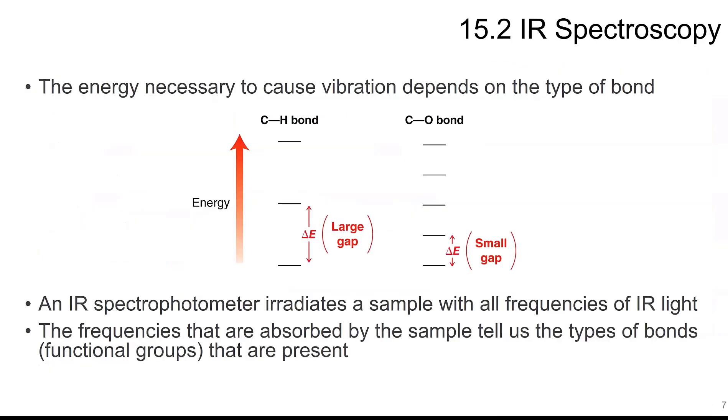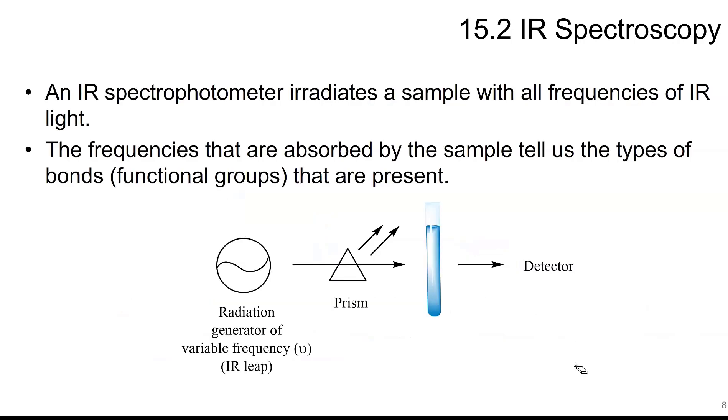So with IR, the energy necessary to cause vibration depends on the type of the bond. So something can have a large gap or it can have a small gap. So the frequencies absorbed tell us the sample types, and it tells us what kinds of functional groups are present. So an IR spectrophotometer irradiates the sample with all frequencies of IR light. The frequencies that are absorbed by the sample tell us the types of functional groups that are present. It goes through a prism of light and sends that information to the detector.